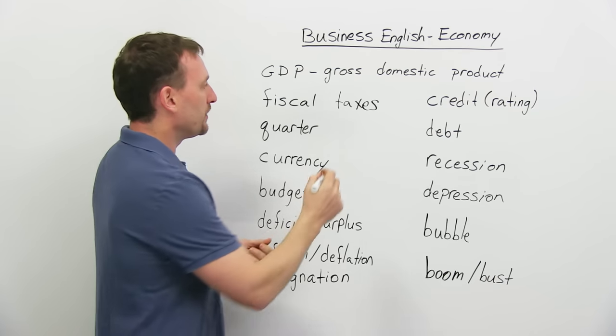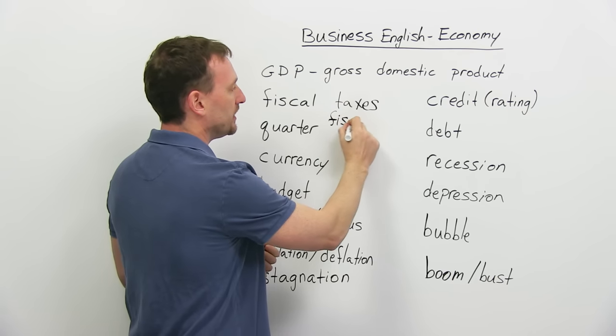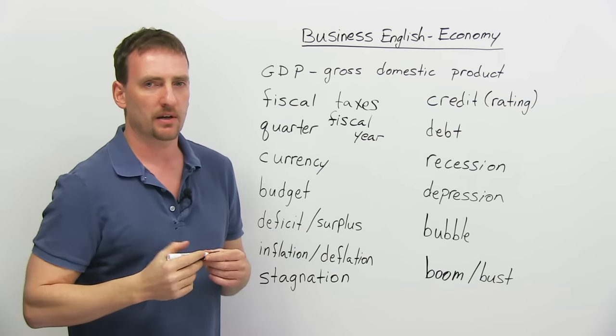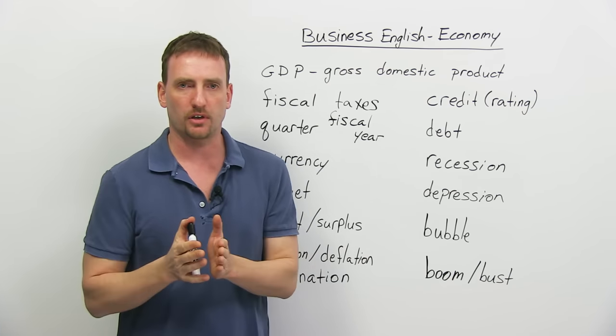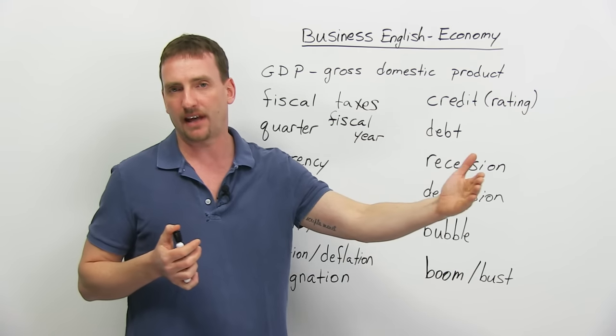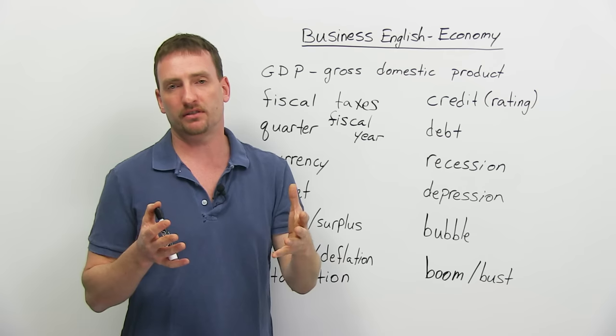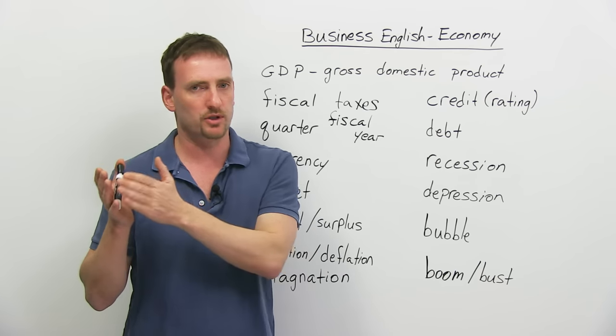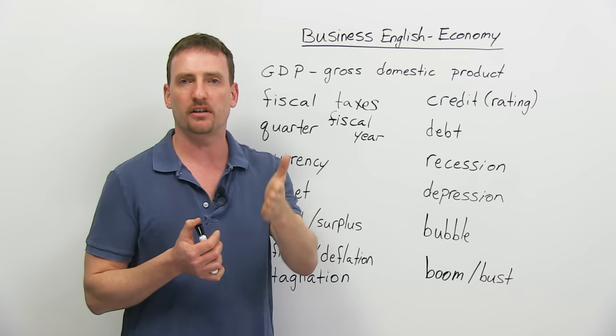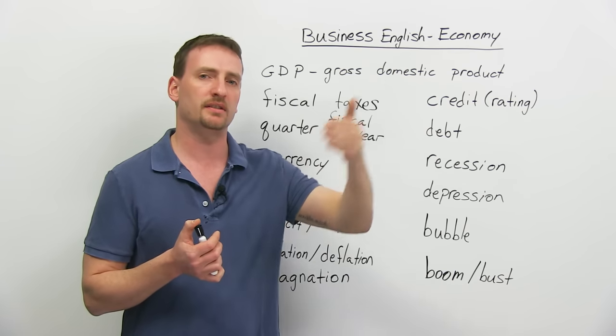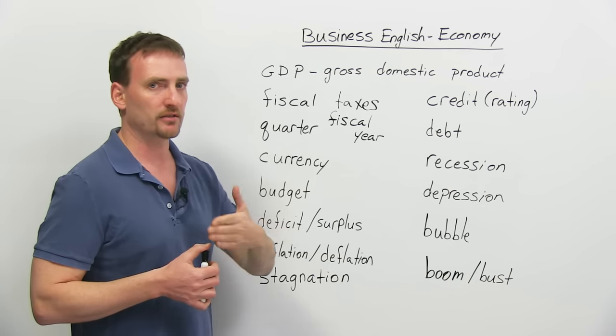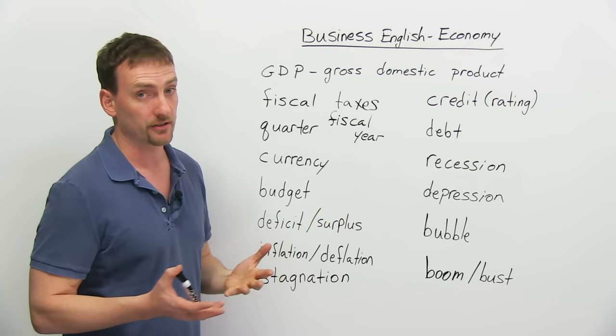The most common thing you'll hear is fiscal year. When we're talking about a company's fiscal year, we're talking about the beginning of its tax year to the end of its tax year. In some countries, everybody matches this to January to December. In other countries, your fiscal year starts when you start your business, and then one year later is the end of your fiscal year. It's easier to match it to the calendar year.